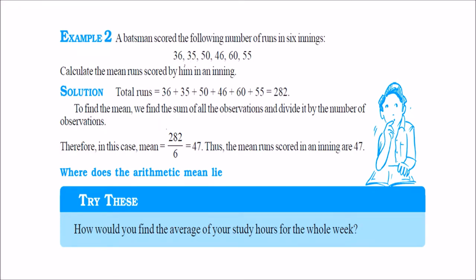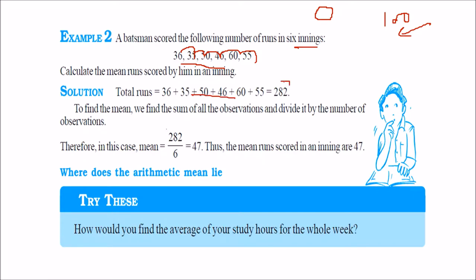A batsman scored certain numbers in 6 innings. We add all these scores, which comes to 282. There are 6 observations. Dividing 282 by 6 gives 47, which is the average of this batsman. He may score a duck or a century in any particular innings, but 47 represents the central value of his performance across all 6 innings.